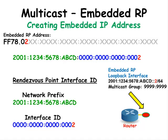The next value is the last digit in the interface ID number. The remaining numbers should all be zero.